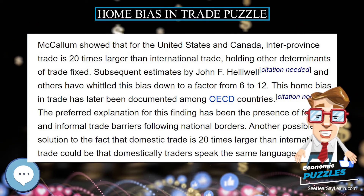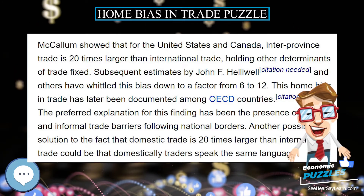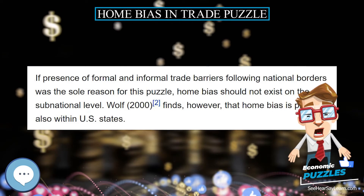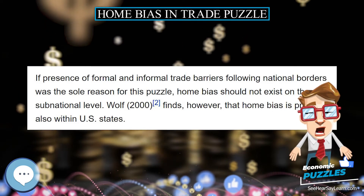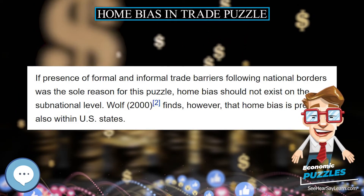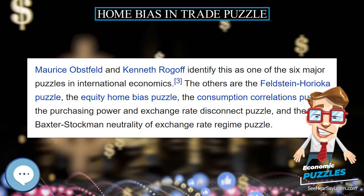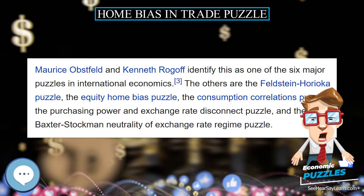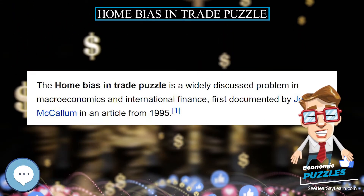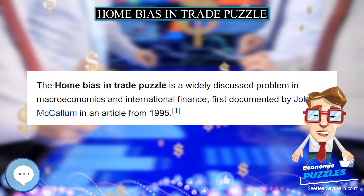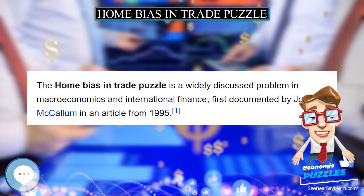Subsequent estimates by John Helliwell and others have whittled this bias down to a factor from 6 to 12. This home bias in trade has later been documented among OECD countries. The preferred explanation for this finding has been the presence of formal and informal trade barriers following national borders.